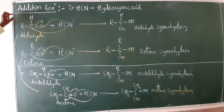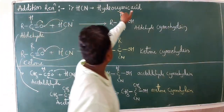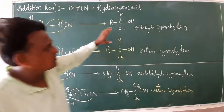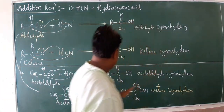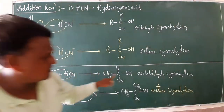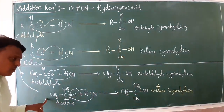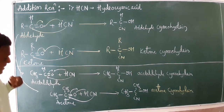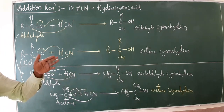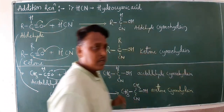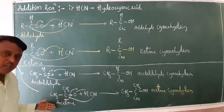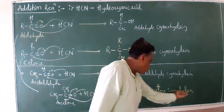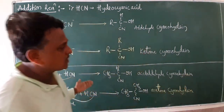This is a very simple addition reaction of the aldehyde chapter. Either aldehyde or ketone reacts with hydrogen cyanide to form corresponding cyanohydrins. You can practice with different aldehydes like benzaldehyde or propionaldehyde, and any ketone — aliphatic or aromatic, such as acetone or acetophenone — to give the corresponding cyanohydrin.